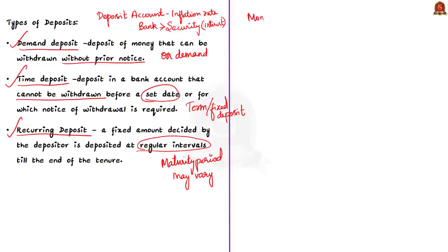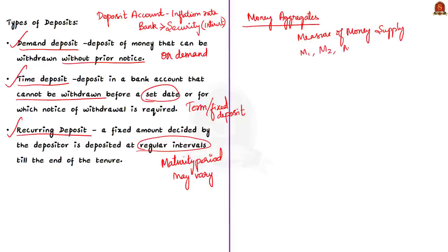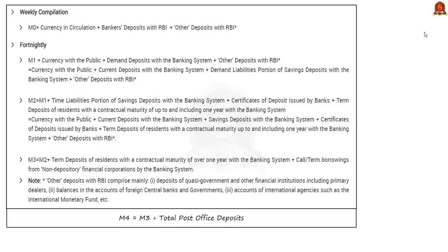Money aggregates are the measures of money supply in the economy. These measures are published by RBI in five terms: M1, M2, M3, M4, and M0. M0 is also known as reserve money, M1 is called narrow money, M2 is called intermediate money, and M3 is called broad money. Note that the formula in NCERT differs from what is used in the current system.